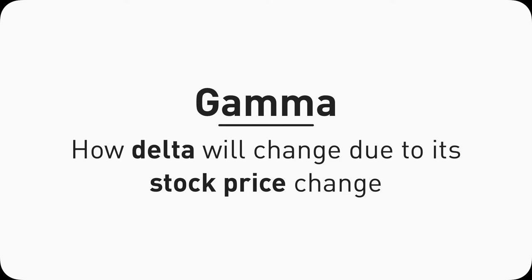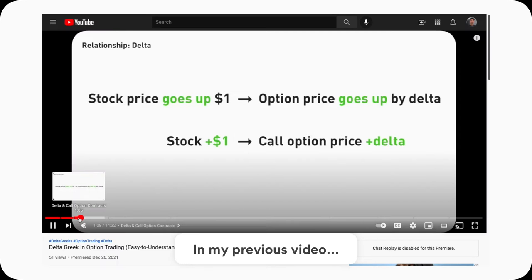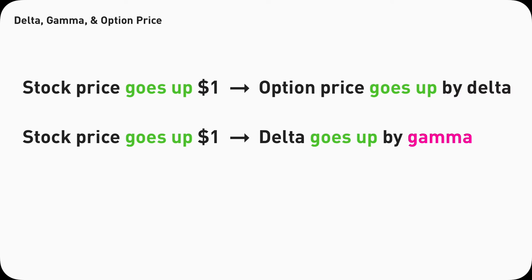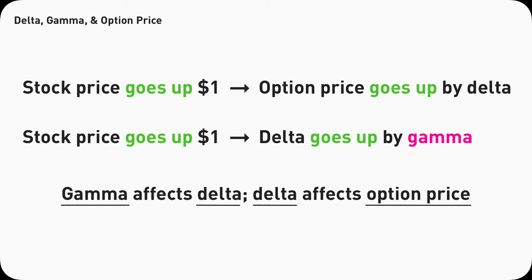Gamma describes how much the Delta will go up for every single dollar the underlying stock increases. If you don't know much about Delta yet, I highly recommend you check out the deep dive on Delta, which I posted last week — there's a card in the corner and a link in the description. This video will make more sense if you know what Delta is and how Gamma connects to it. So Gamma itself does not directly affect the option price — it only affects Delta.